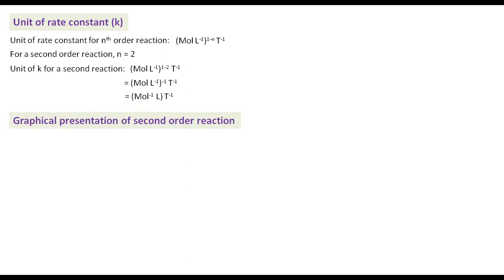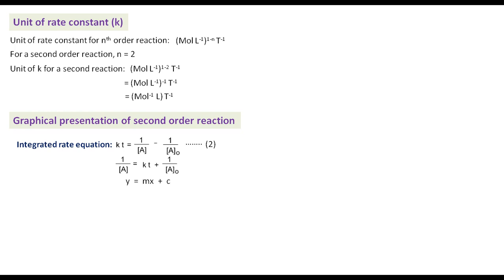For the graphical presentation of second order reaction, the integrated rate equation Kt = 1/A − 1/A₀ can be rearranged to: 1/A = Kt + 1/A₀. Comparing this with the straight line equation y = mx + c, if we plot 1/A against time it gives a straight line with slope equal to K and intercept equal to 1/A₀.